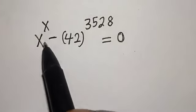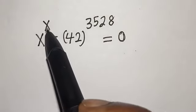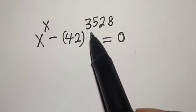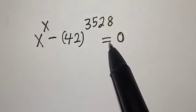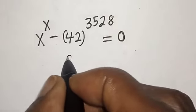Hello, welcome to Magist. In this class, we want to find the value of X from this equation: X^X - (42)^3528 = 0. Like, share, comment, and subscribe. Solution: